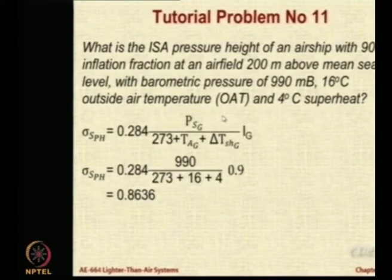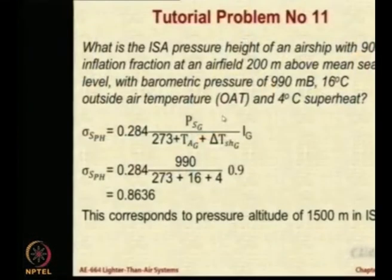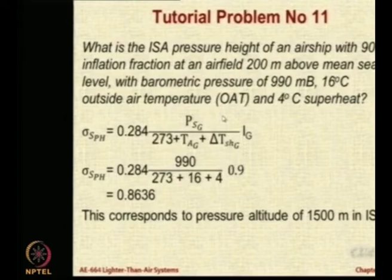Does anybody have any textbook which contains the atmospheric ratios? If not, I will just tell you that this corresponds to 1500 meters under ISA conditions. So, this airship can fly up to an altitude of 1500 meters above mean sea level. So, the delta H it can do is only 1200 meters.